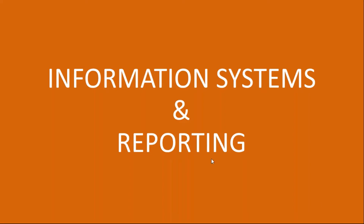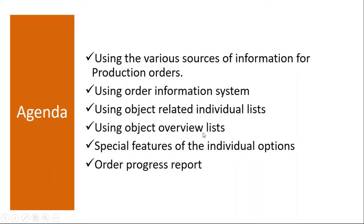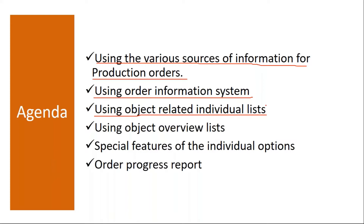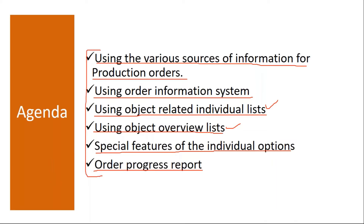Today we will cover the reports. The topics we are going to cover: using various sources of information for production orders, using the order information system, using object-related individual list, how to see the individual list in the reports, using object overview list, special features of the individual options, and we will see the order progress report. These are the topics we will be covering in the order information systems and reporting.